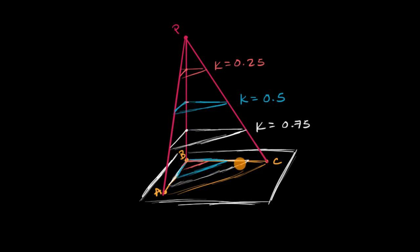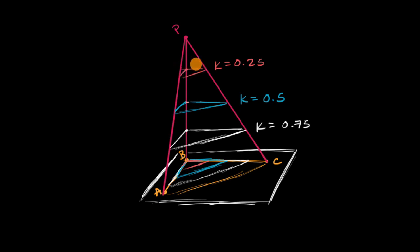And the reason why all of these dilations are centered at point B is because point P is directly above point B. But this is a way to conceptualize dilations and see the relationship between cross-sections of a three-dimensional shape — in this case, a pyramid — and how those cross-sections relate to the base of the pyramid.